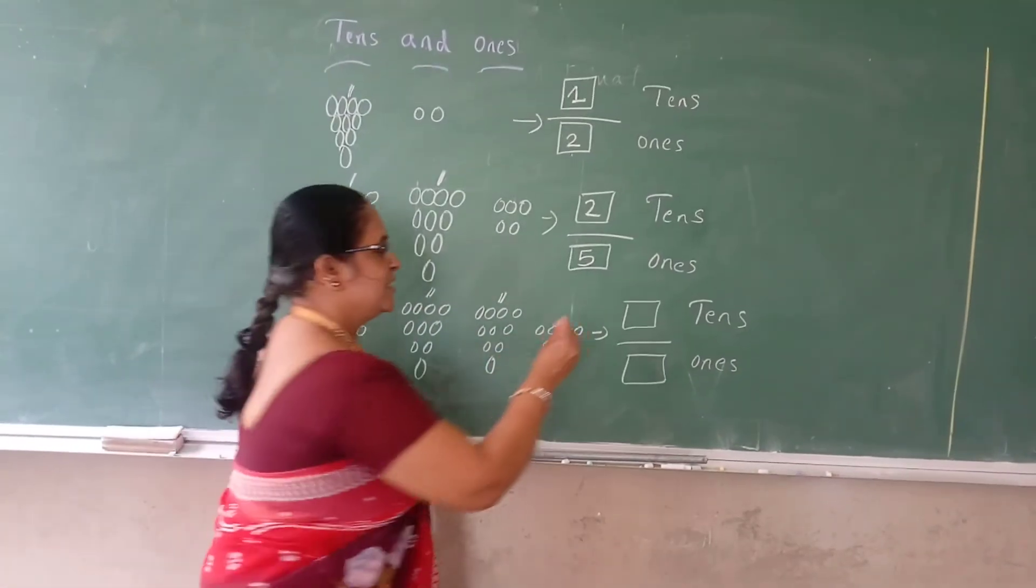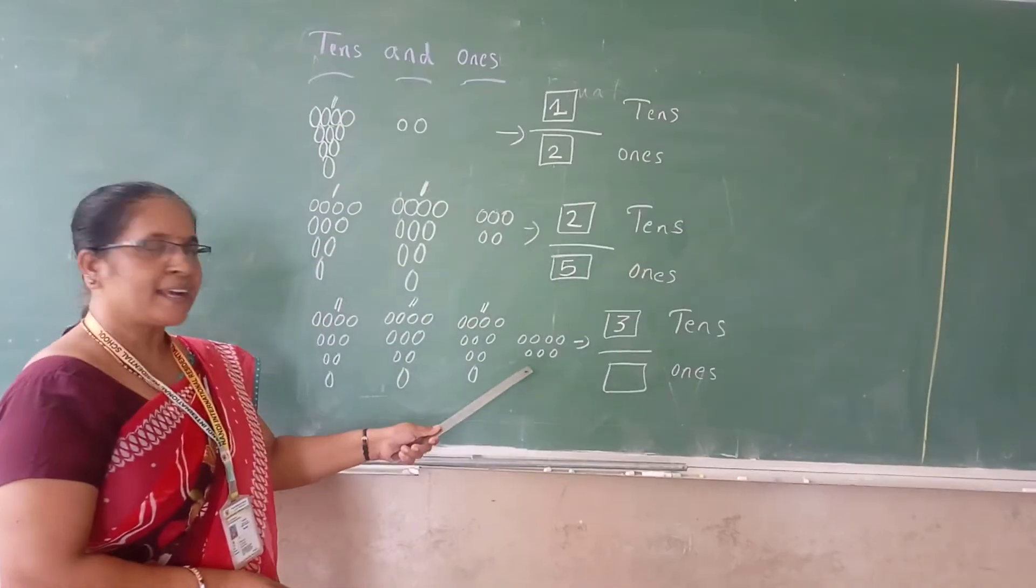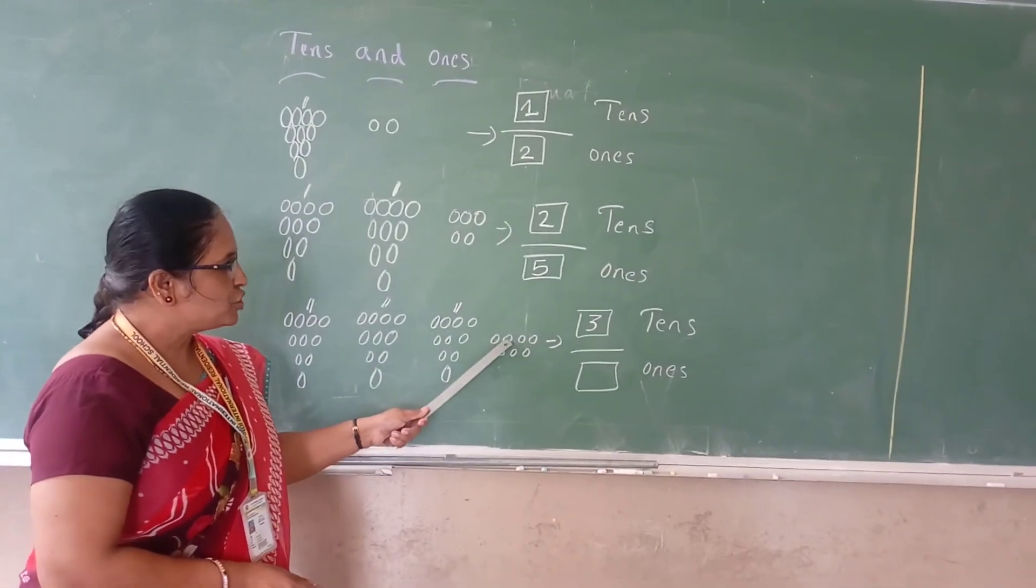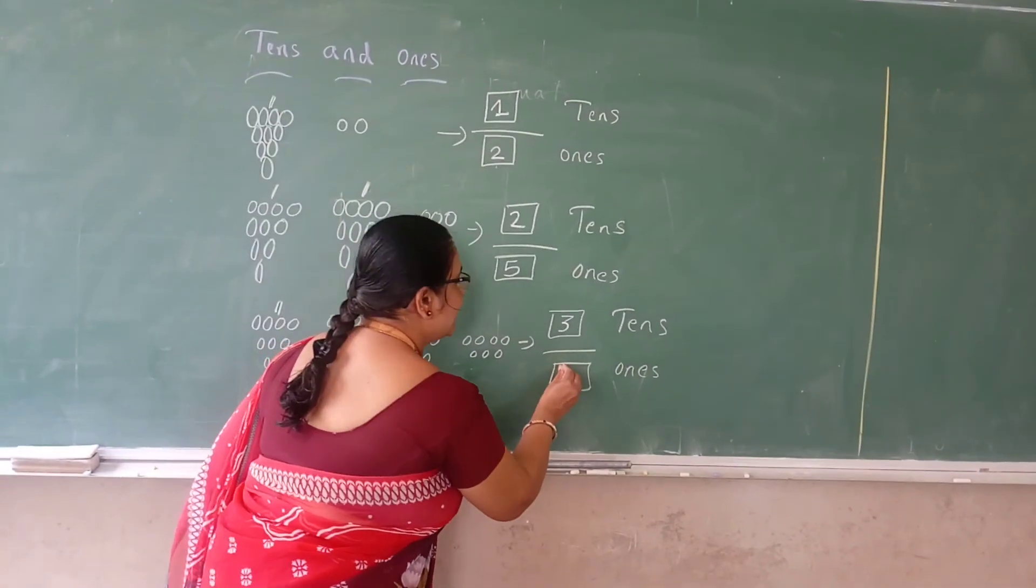How many are there? 3 groups, 3 tens. How many are there? 3 tens. Extra how many are there, just you counted? 1, 2, 3, 4, 5, 6, 7. How many ones are there? 7 ones.